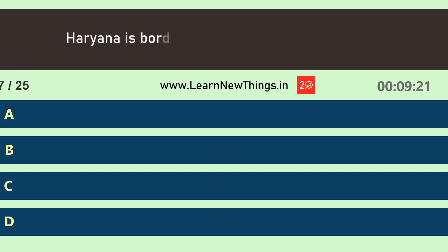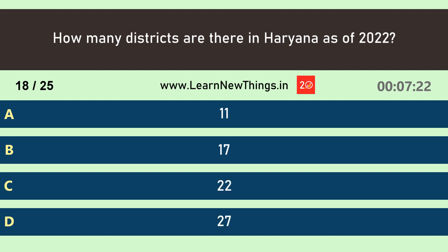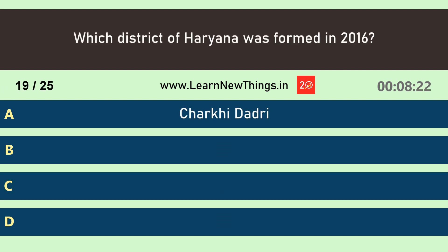The First Battle of Panipat was fought in which year? Answer: 1526. Haryana is bordered by which state on the East? Answer 10: Uttar Pradesh. How many districts are there in Haryana as of 2022? Answer: 22.